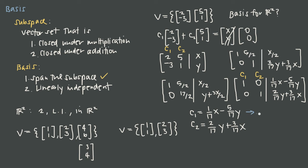Plugging in x=0 and y=0: in the C1 equation both terms go to 0, giving C1=0. In the C2 equation both terms go to 0, giving C2=0. So when x and y are both 0, the only possible values are C1=0 and C2=0. This means the two vectors are linearly independent.